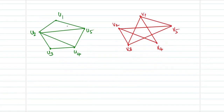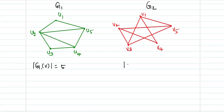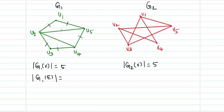We will move on with the second example. Suppose this is G1 and this is G2. For G1, the number of vertices is 5, and G2 also has 5 vertices. The number of edges in G1 is 7, and G2 also has 7 edges.